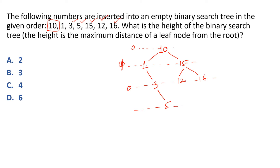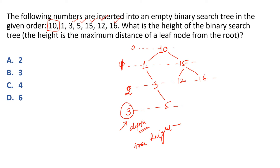Tree banane ke baad height find karne ke liye lowest level dekhte hain. The last level depth is 3 — so the tree height is 3, which is option B.